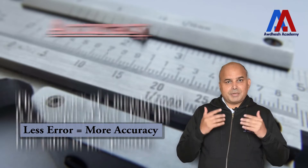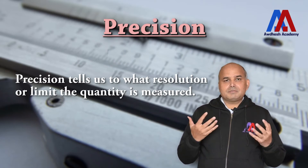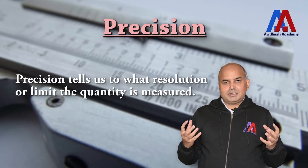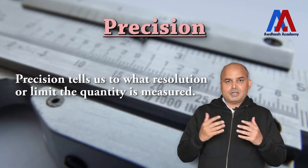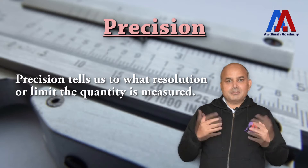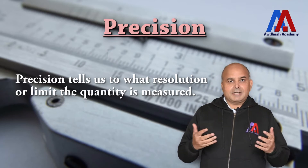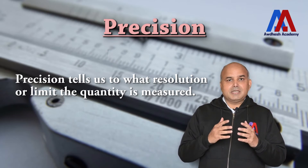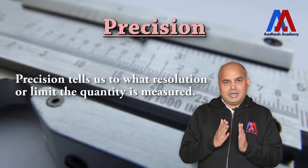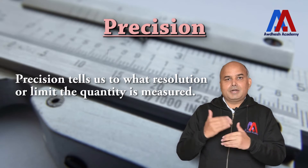The next important term is precision. Precision means the resolution or the limit of the quantity being measured — every instrument has a precision level. For example, when measuring a person's weight, one instrument may read 50 kg, another may read 50.51 kg, and a more precise one may read 50.517 kg — measuring down to grams. So if an instrument has more precision, it is able to measure much more finely resolved dimensions.